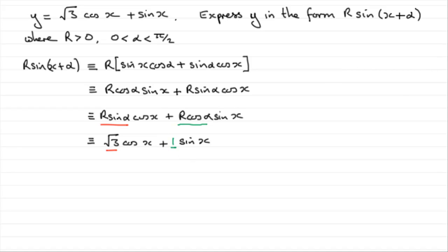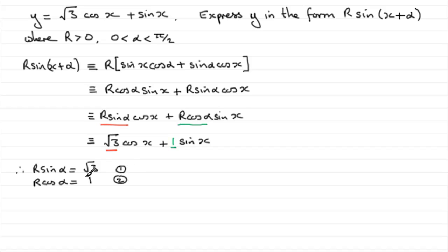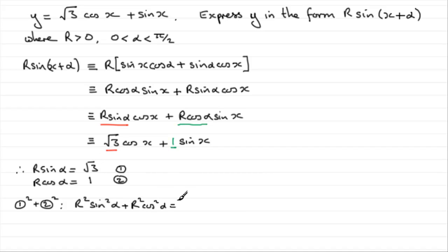Comparing coefficients, we have r sine alpha equals root 3 — call that equation 1 — and r cos alpha equals 1 — call that equation 2. The standard way to solve for r is to square both equations and add them: equation 1 squared plus equation 2 squared gives r squared sine squared alpha plus r squared cos squared alpha equals root 3 squared plus 1 squared, which is 3 plus 1.